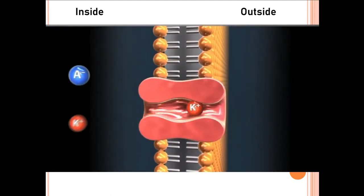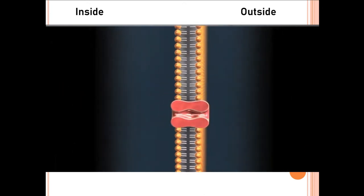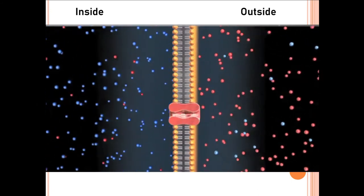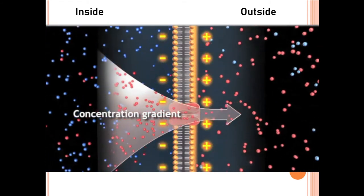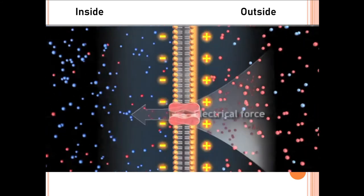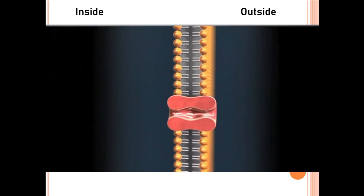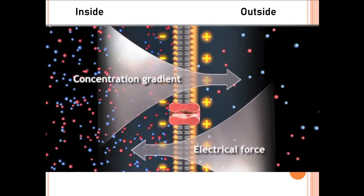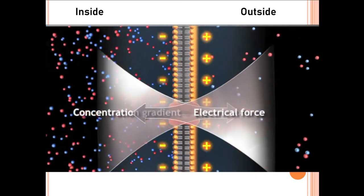Diffusion takes place when potassium ions are in higher concentration on one side of the membrane and tend to move to the other side. Potassium ions are in higher concentration inside the cell and try to move outside, making the cell more negative inside because positive ions are leaving. The concentration gradient drives potassium out while the resulting negativity inside creates an opposing electrical force. When these two forces become equal and stop potassium diffusion, the membrane potential due to potassium is known as the Nernst potential, with a value of minus 86 millivolts. For sodium ions, the Nernst potential is plus 61 millivolts.